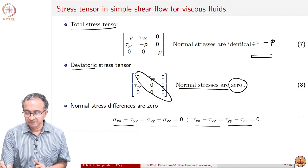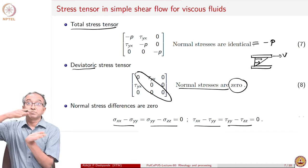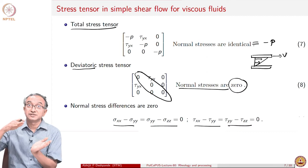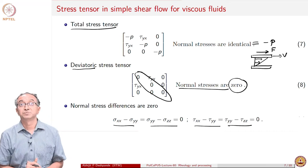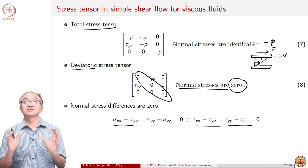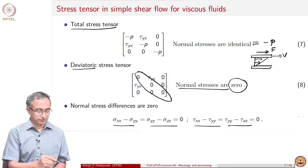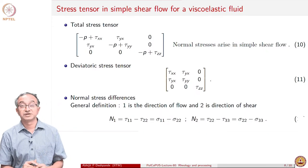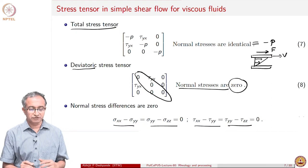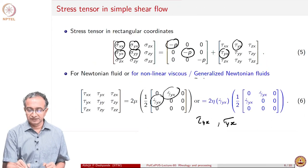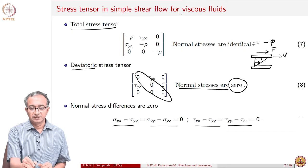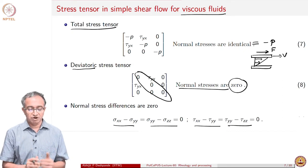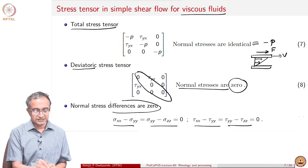This implies that to keep the top plate moving at constant velocity, we only need to apply a tangential force — nothing else is required for a Newtonian fluid. The same feature is also observed for shear thinning fluids: in generalized Newtonian fluids, only the yx component is non-zero. So for both linear viscous (Newtonian) and non-linear viscous (generalized Newtonian) fluids, normal stress differences are zero.